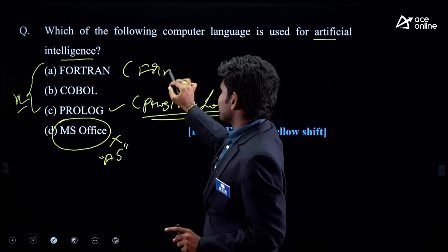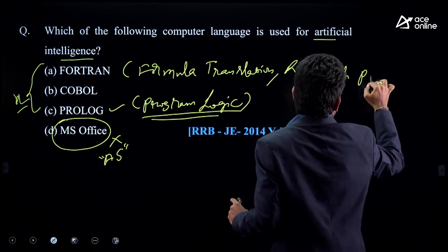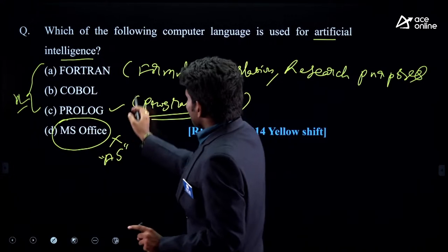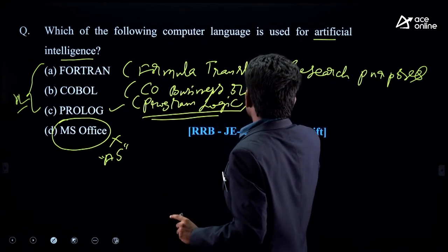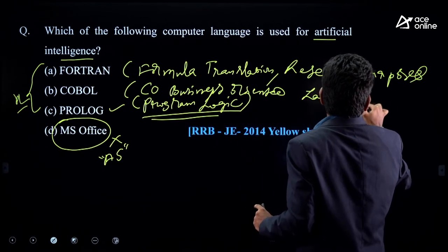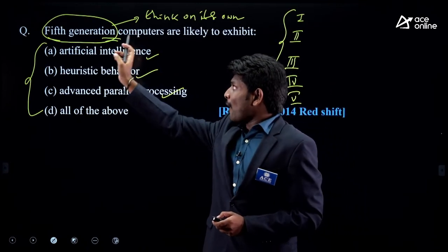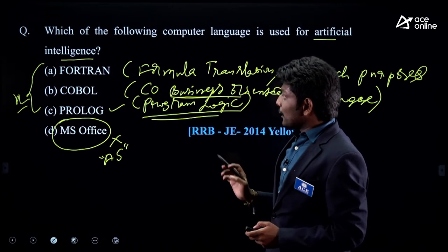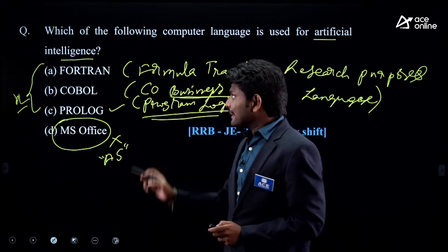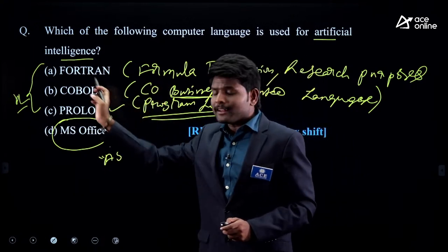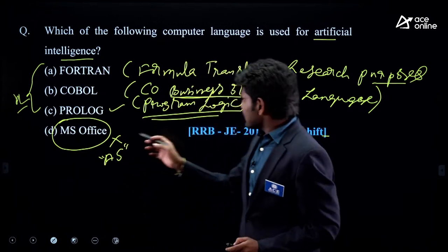Fortran stands for Formula Translation, used for research purposes. COBOL — Common Business Oriented Language — is for business, not research. So, if the question asks about artificial intelligence, choose Prolog. If it asks about research purposes, choose Fortran. If it asks about business purposes, choose COBOL.